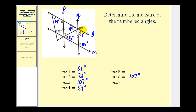There are a couple of ways of doing this. Notice that the angle measuring one hundred seven degrees forms a vertical pair with angles one and five combined, which means the measure of angle one plus the measure of angle five must equal one hundred seven degrees. We already know angle one is fifty-eight degrees, so the measure of angle five is one hundred seven minus fifty-eight, which gives us forty-nine degrees. Angle seven is also forty-nine degrees.